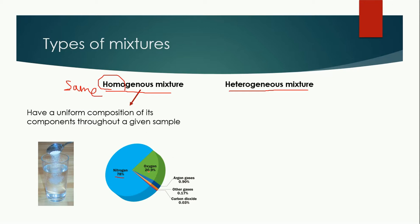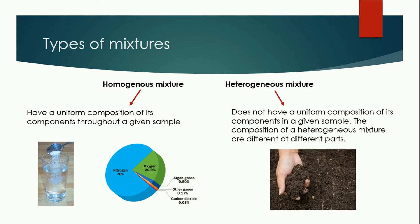Heterogeneous mixture: hetero means different, so uniform composition is not present. For example, here we have soil. At this point, the composition is different. At this point, the composition is different. Similarly, at this point, the composition of soil is different. So this is a heterogeneous mixture.